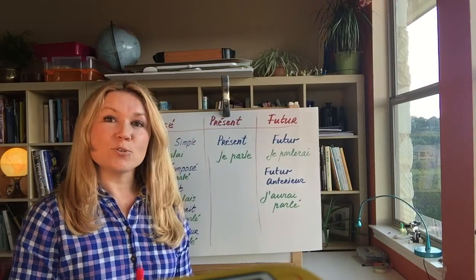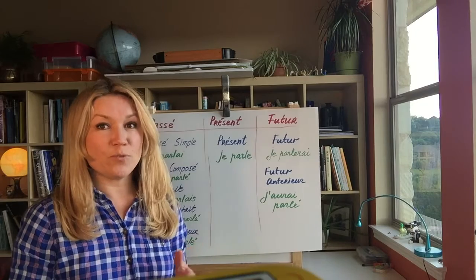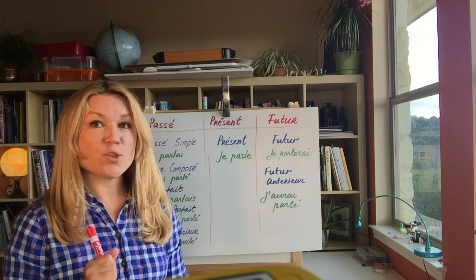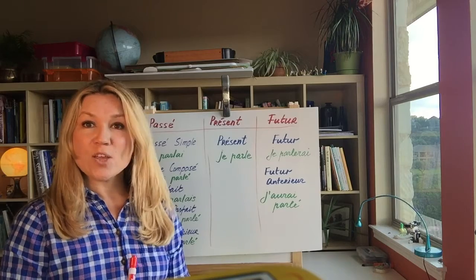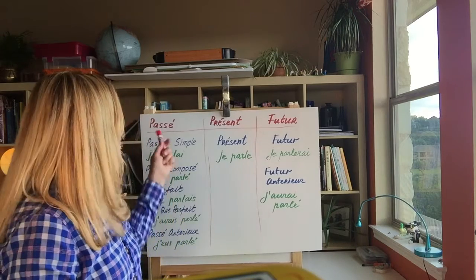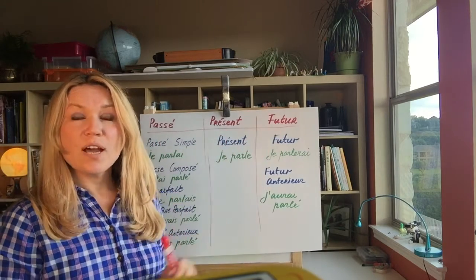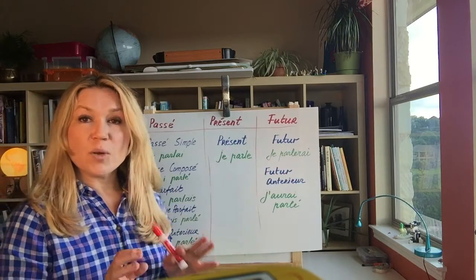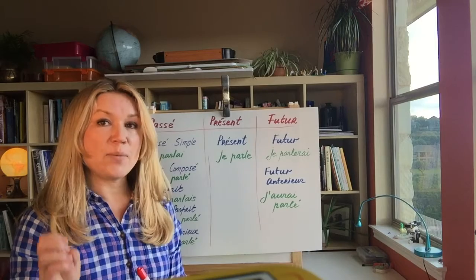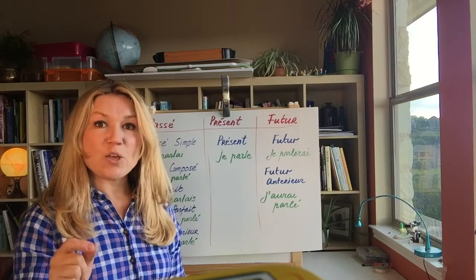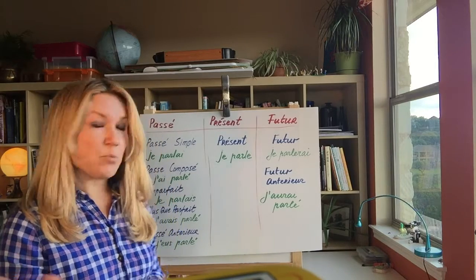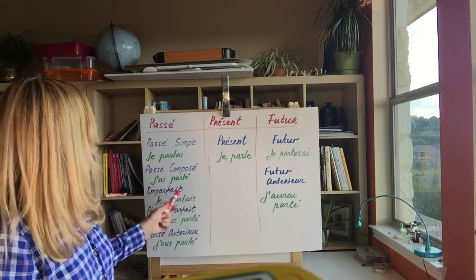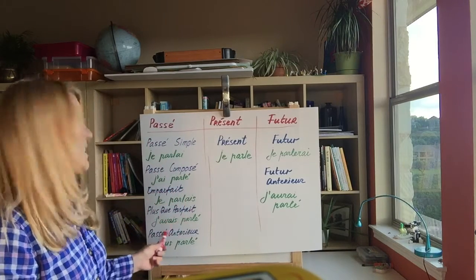Now let's travel across the English Channel — or, as some would prefer, La Manche — and see how another Western European language, French, divides time. French, as in English, recognizes past, present, and future. However, the grid is quite different. French is very precise in how it wants to describe its past actions, especially in the written language. Therefore we have: passé simple, passé composé, imparfait, plus-que-parfait, and passé antérieur.